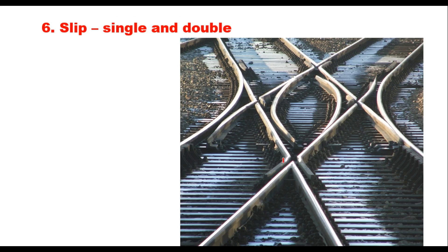In a double slip, on the diamond crossing two points are provided on one side and two points on the other. A vehicle coming from one direction can be taken through these points to another track, or a vehicle from another direction can be transferred accordingly — providing full flexibility of movement across the crossing.